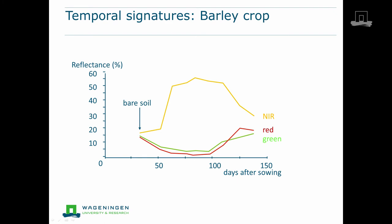If we look at the reflectance as a function of time, we call this the temporal signature. Here we see the temporal signature for three parts of the spectrum for some barley crop in days after sowing. About one month after sowing, the crop emerges. At that moment, the reflectance at green, red, and near infrared wavelengths is still almost equal, because the reflectance for bare soil in these bands is almost equal.